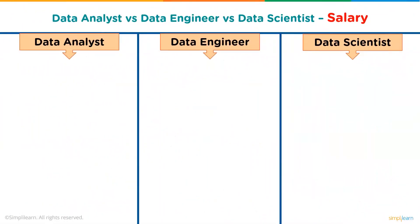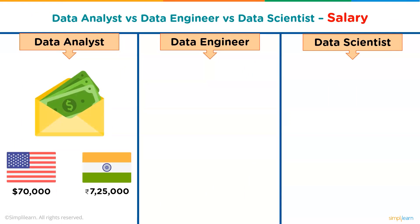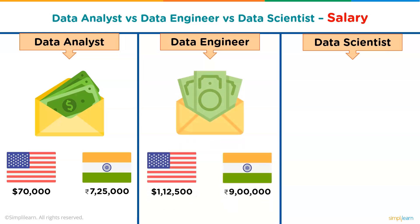Now let's look at the salaries of a data scientist, data analyst, and data engineer. A data analyst in the United States earns over 70,000 dollars per annum, while in India a data analyst can earn nearly 7 lakh 25 thousand rupees per annum.